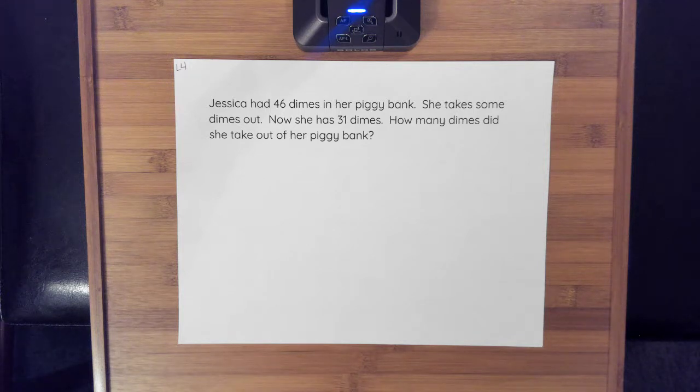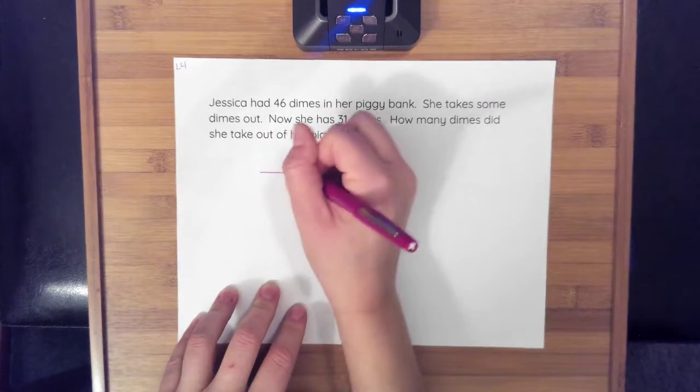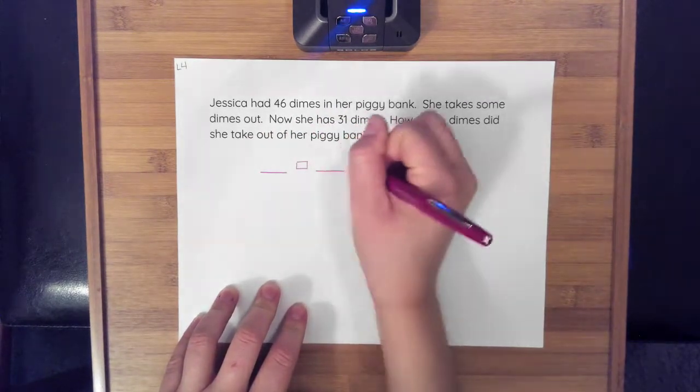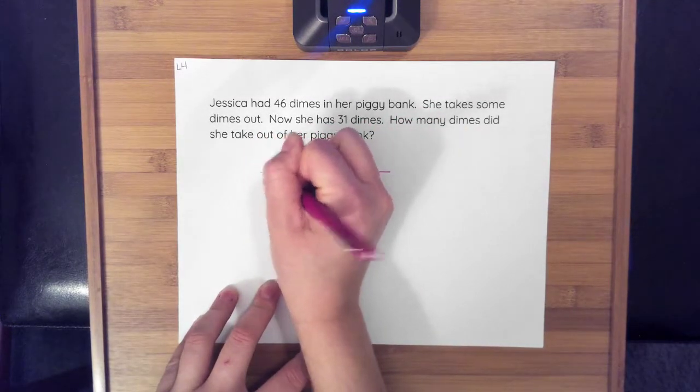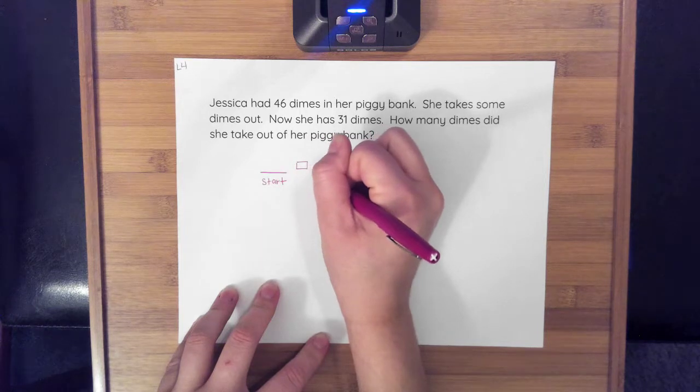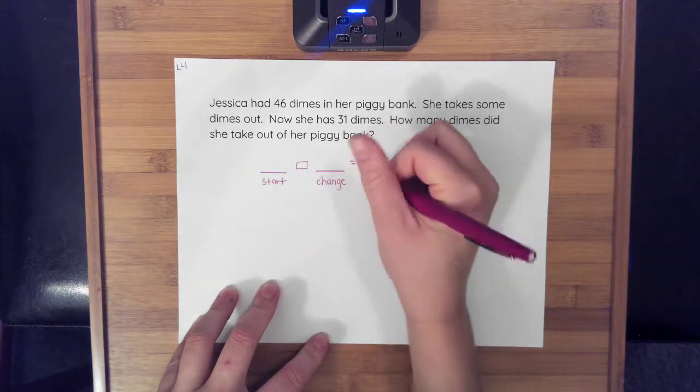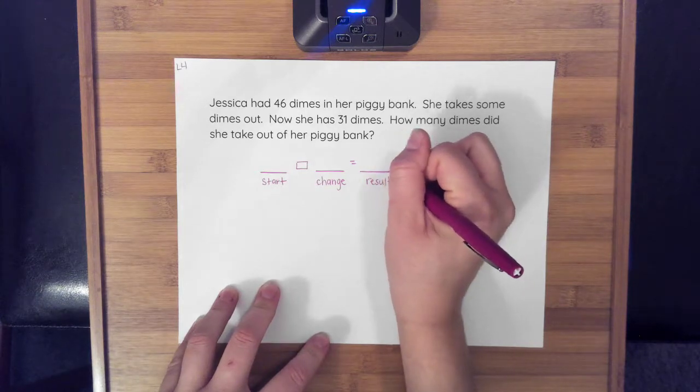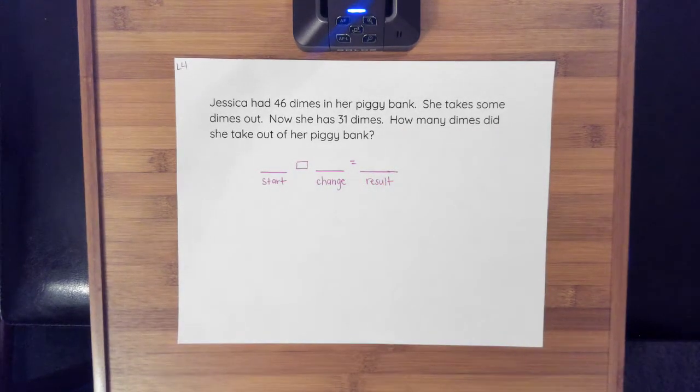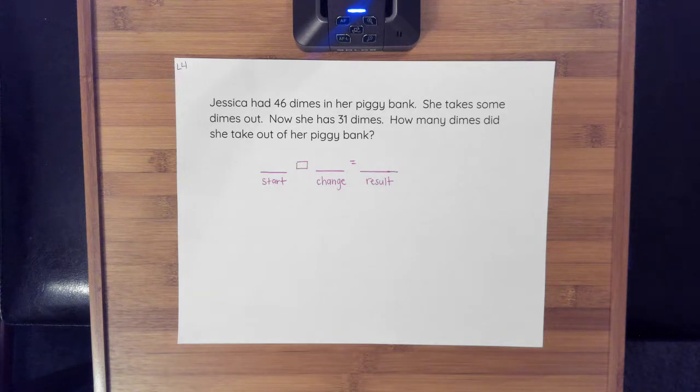What do you know about the change unknown in any kind of word problem? When I set up my equation for word problems, the first blank is the start—the number I started with. The second blank is the change—what I add or subtract. And the third blank is the result—what I end up with. If I'm adding, it's my sum. If I'm subtracting, it's my difference.